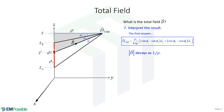Here's the final answer. We can see that the magnitude of the electric flux decays as 1/ρ — not 1/ρ² or 1/ρ³, but 1/ρ — which is quite interesting.